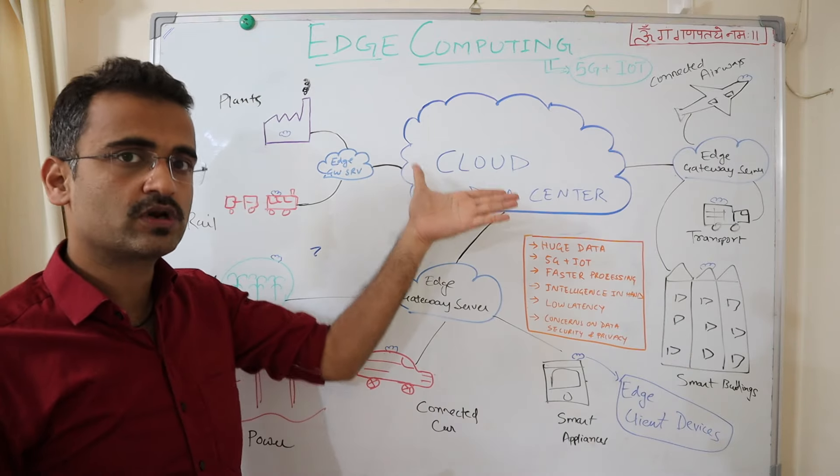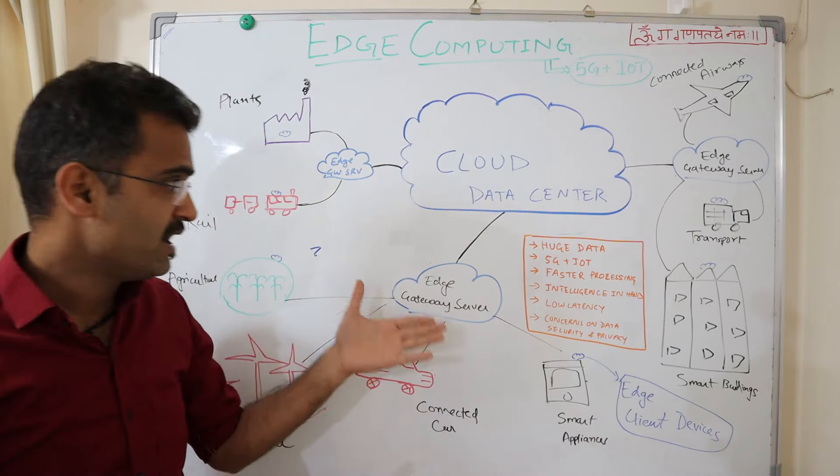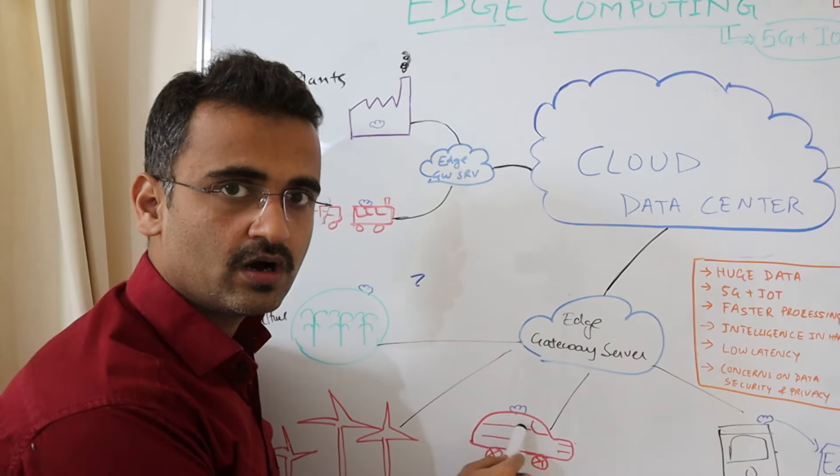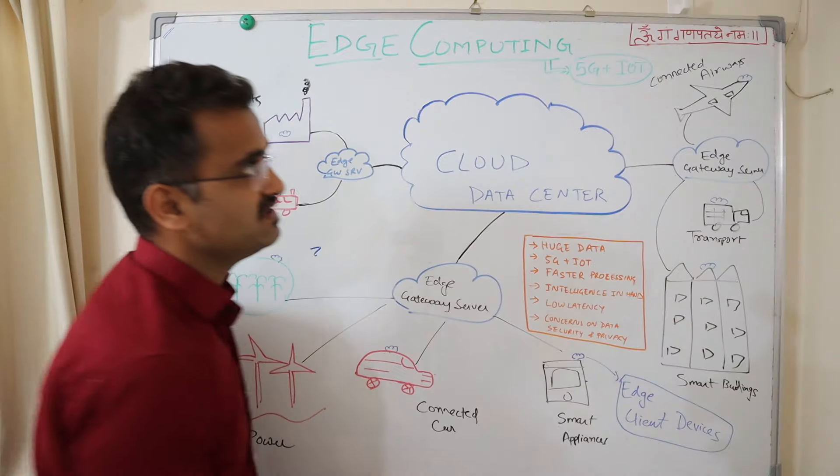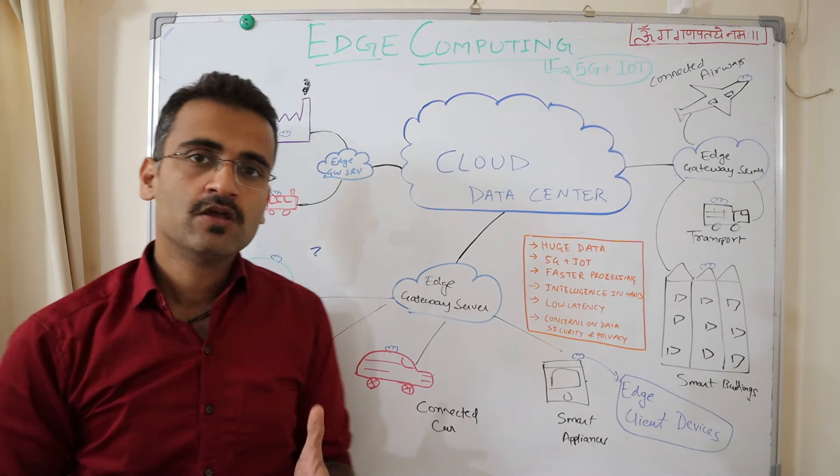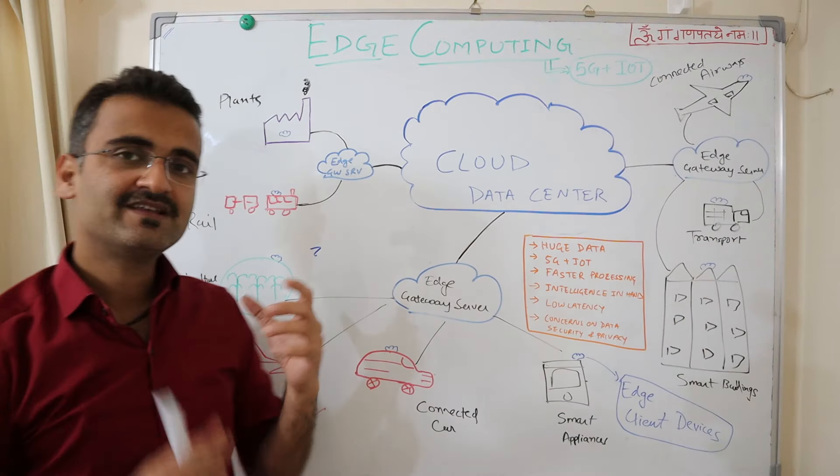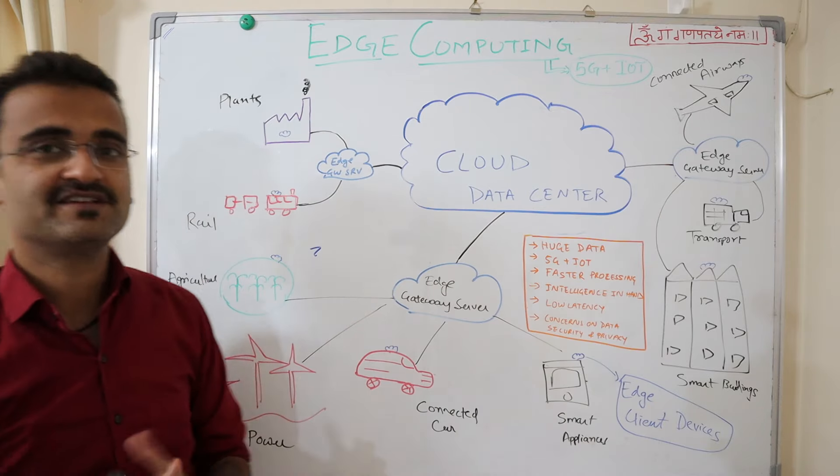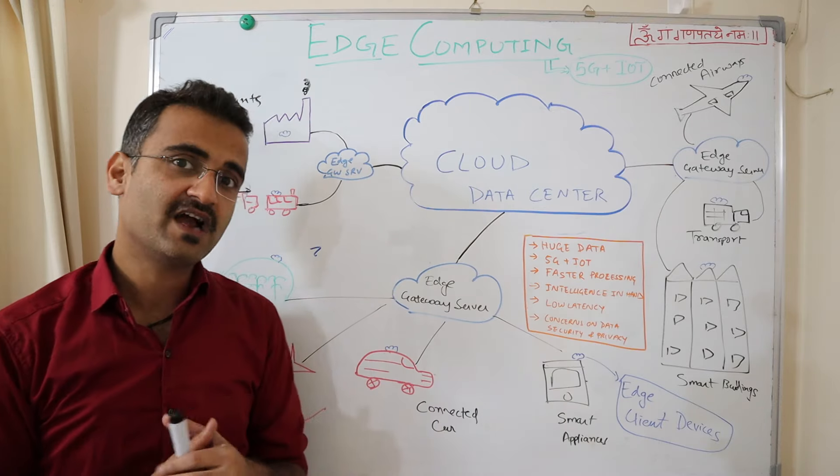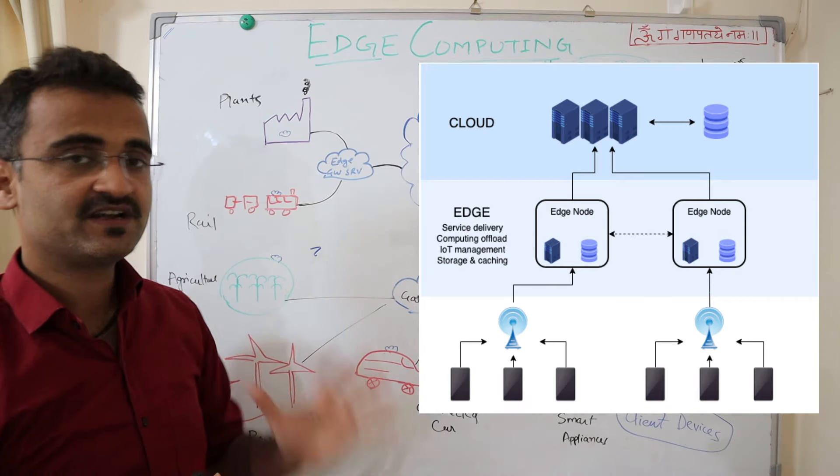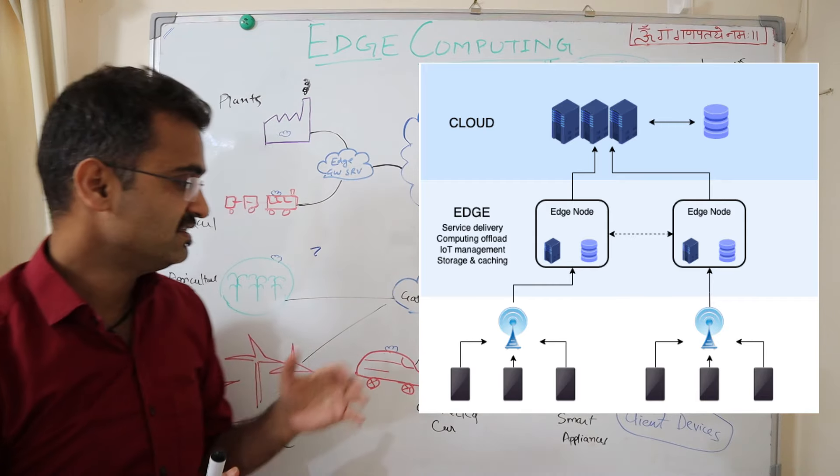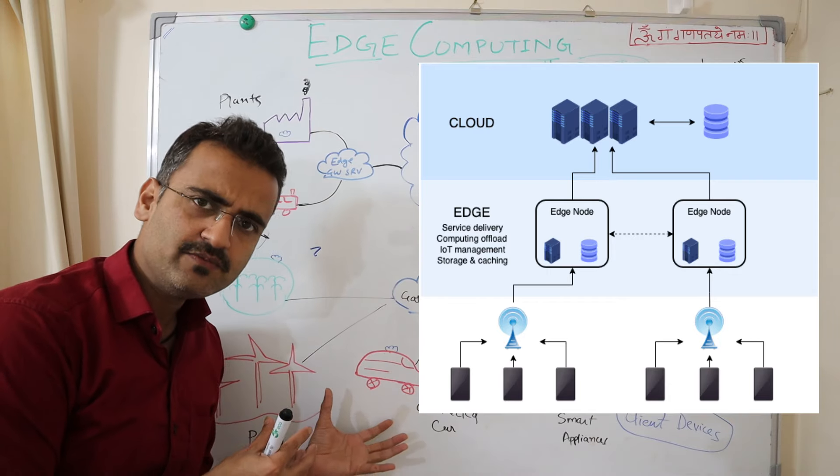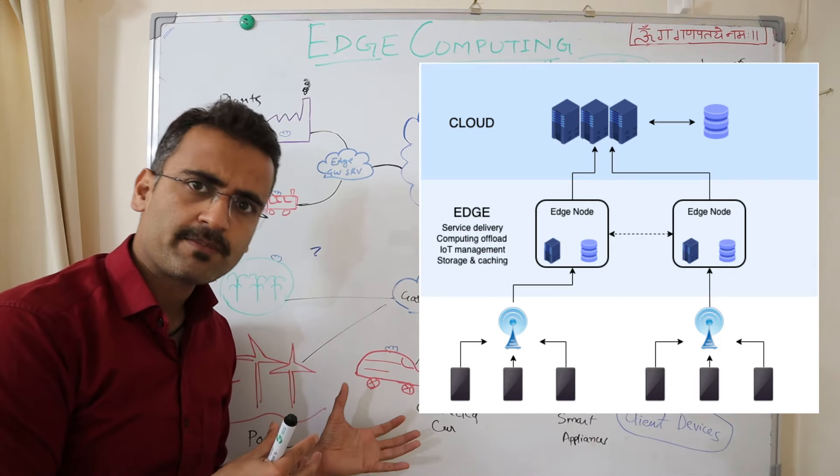So basically, we have three different players in edge computing. First is your cloud data center. Second is your edge gateway server. And third, you see these blue logos on top of every system. These are edge clients. So what happens in edge computing is that there is a smart device or an edge client device which is installed on all these systems, which records all the different kind of data which is being generated by these different devices.